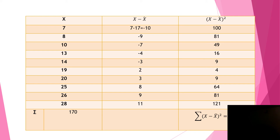Now look at this table. The first column is x: 7, 8, 10, 13, 14, 19, 20, 25, 26, 28. The second column we need is (x minus x̄): so 7 minus 17 is minus 10, 8 minus 17 is minus 9, 10 minus 17 is minus 7, 13 minus 17 is minus 4, and we continue till the end.